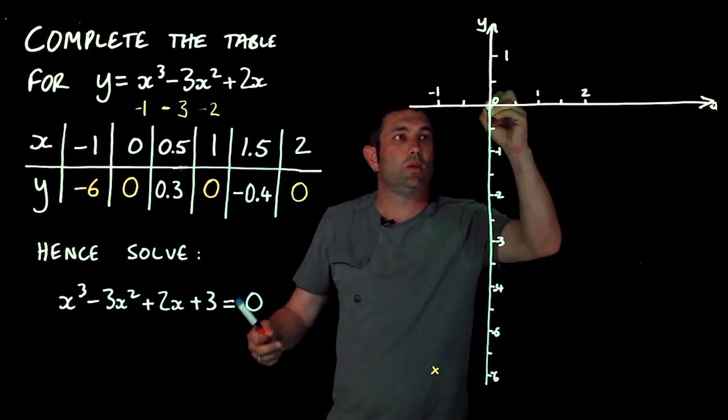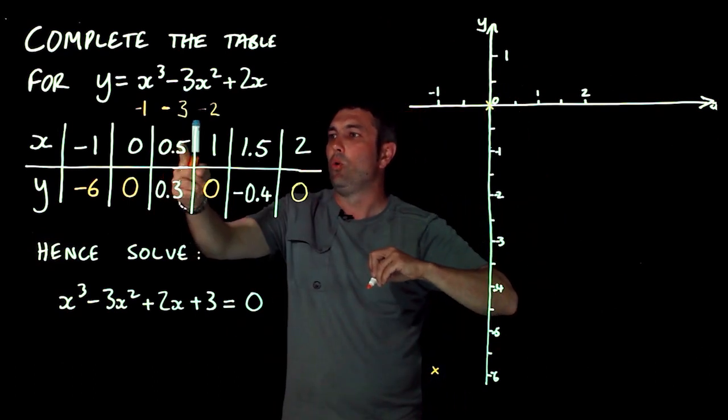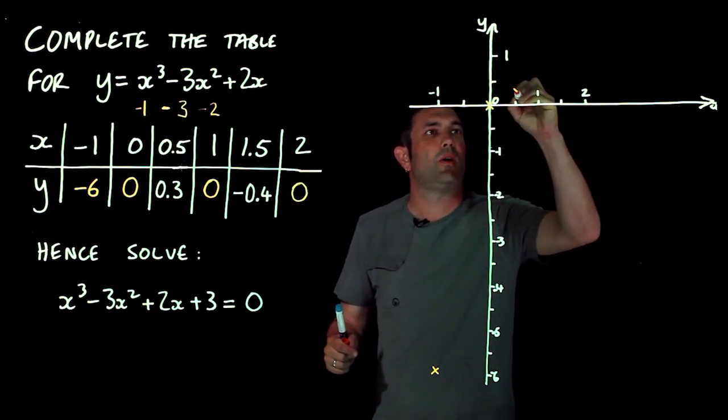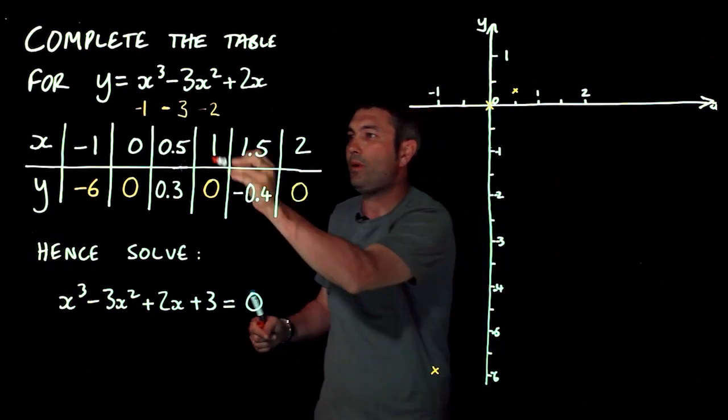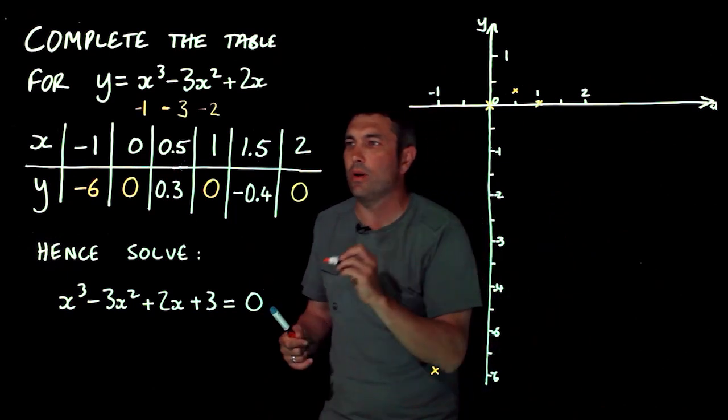So zero, zero, the origin. I'm going to put a cross there. 0.5, 0.3. Well, there's 0.5. Now, 0.3 is just above halfway between there. One, zero. What's happening here? Maybe it's like that. You don't know. If you don't know what this looks like, make sure you plot all the points, don't guess.